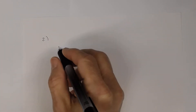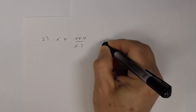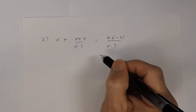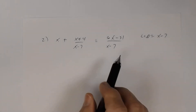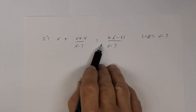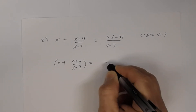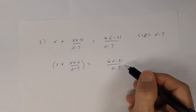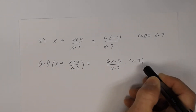Let's look at number 2. Suppose you had x plus (x plus 4) divided by (x minus 7) equals (6x minus 31) divided by (x minus 7). The first thing you always do is factor the denominators. These denominators cannot be factored further, so your LCD is x minus 7. The next step is to clear your fractions — multiply both sides by the LCD, x minus 7.